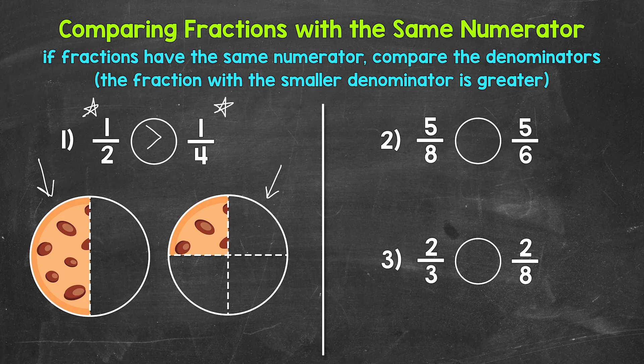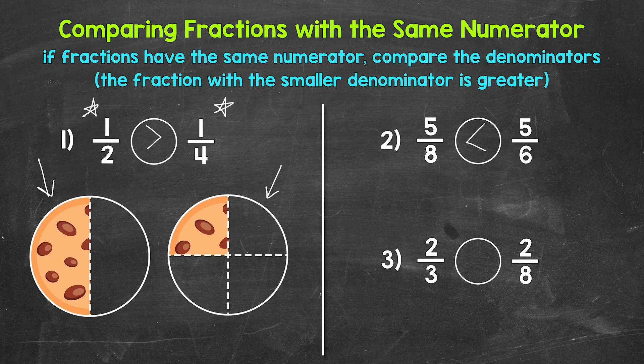The wholes have been divided into eight equal parts and six equal parts. The whole divided into six parts will have bigger parts than the whole divided into eight parts. Since we have the same numerator — five — we compare the denominators. Six is the smaller denominator, so five sixths is greater than five eighths. Five sixths represents more of the whole, and we can read this comparison from left to right as: five eighths is less than five sixths.